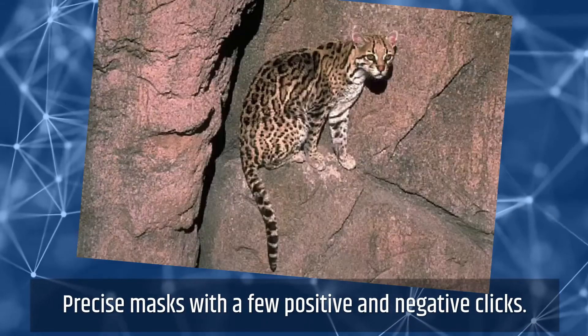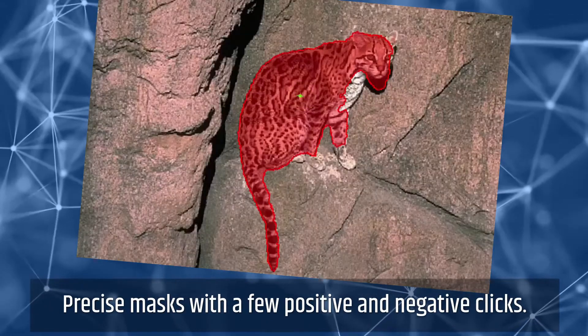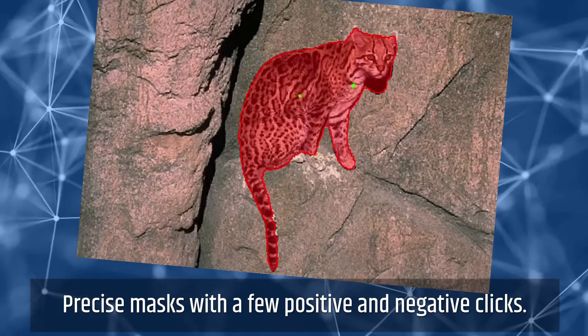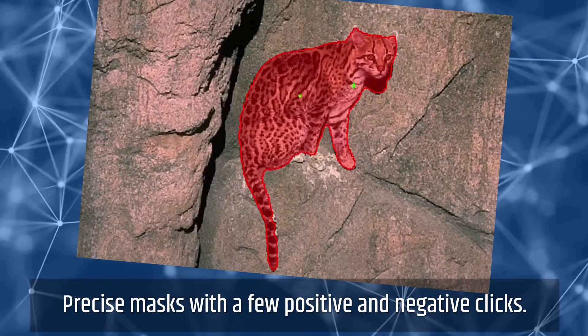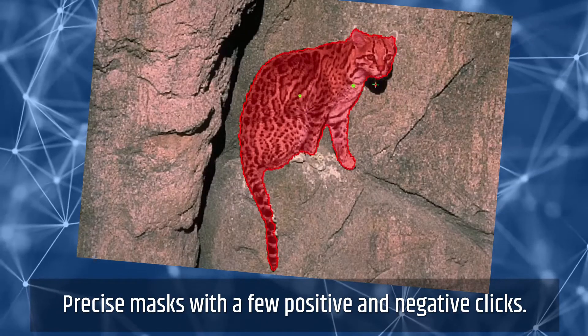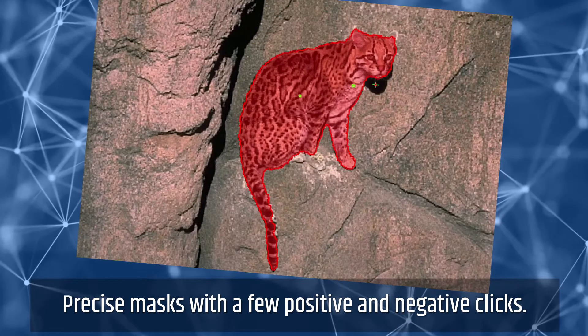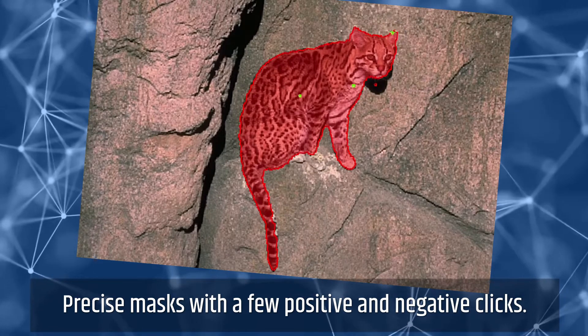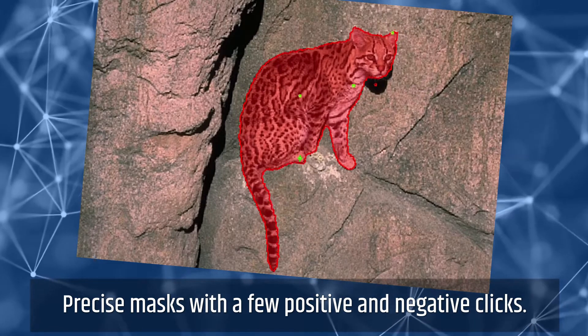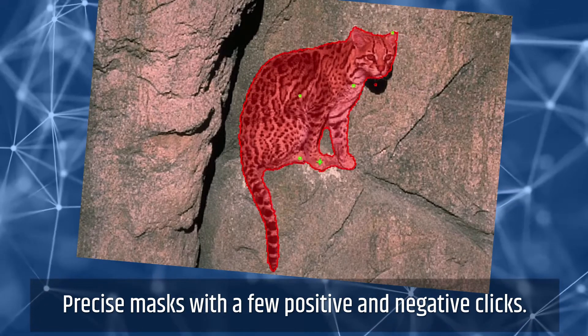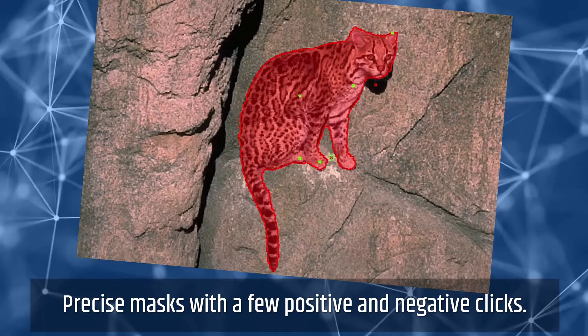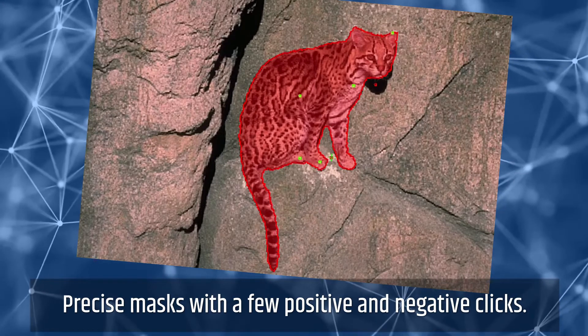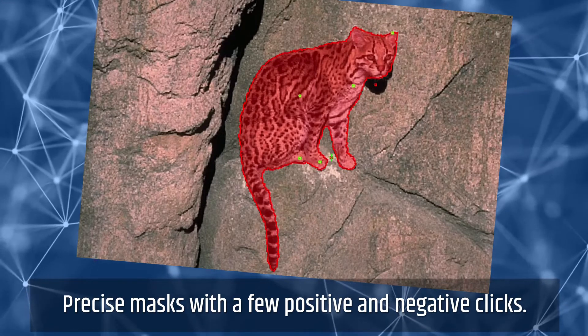Interactive segmentation can mark objects by simply making a few positive and negative mouse clicks. A positive click will encourage the software to include the area around the click in the object, and a negative click will discourage it.